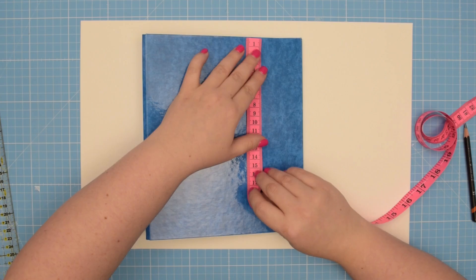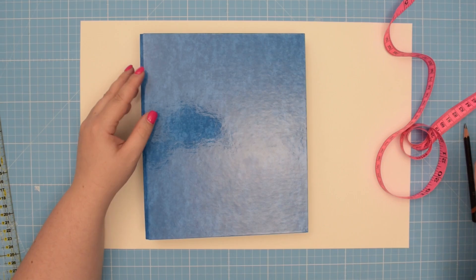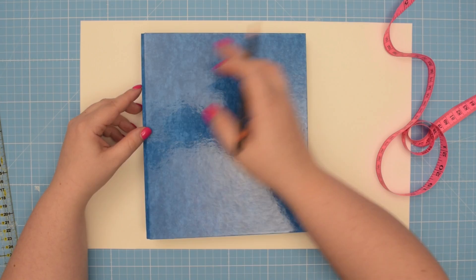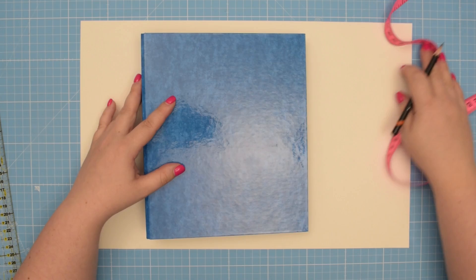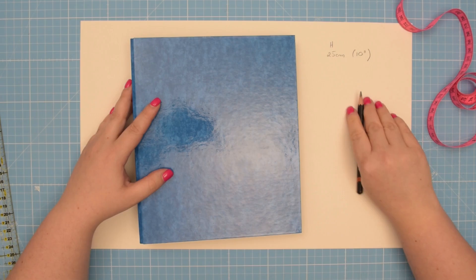To draft the right size of pattern, take your binder and measure the height. For me, this is about 23 centimeters. What I like to do is to add additional 2 centimeters, which is about 3 quarters of an inch, to the height and width of my binder cover. This way, I know that once I made the cover, I can easily topstitch around to give it a nice and neat finish. I'm going to write that down. Height is 25 centimeters, so that's about 10 inches.